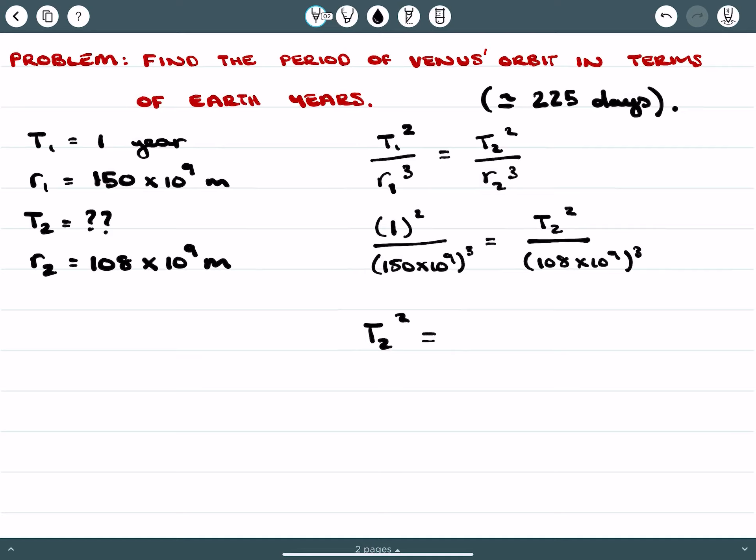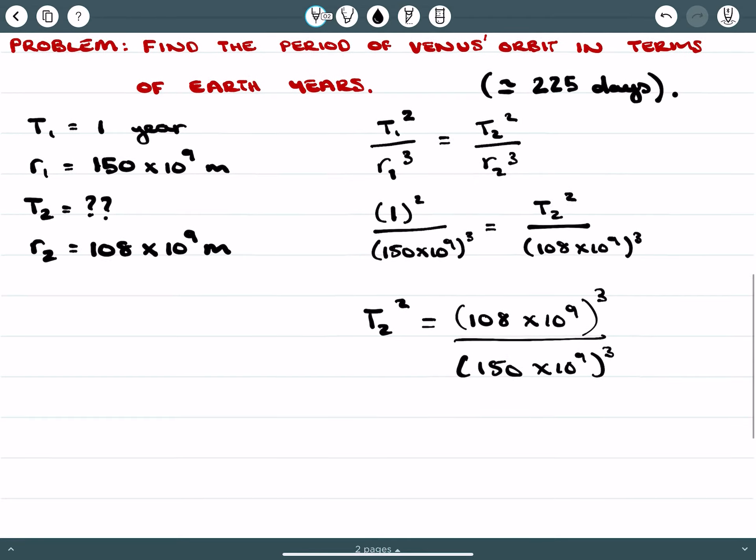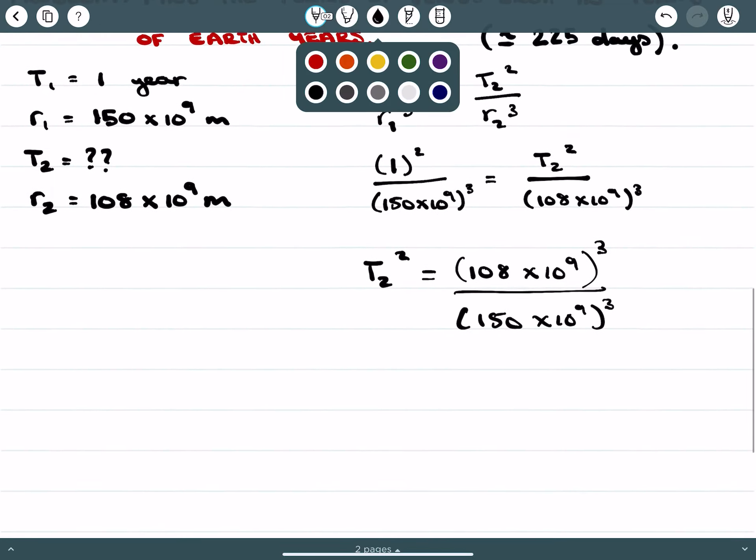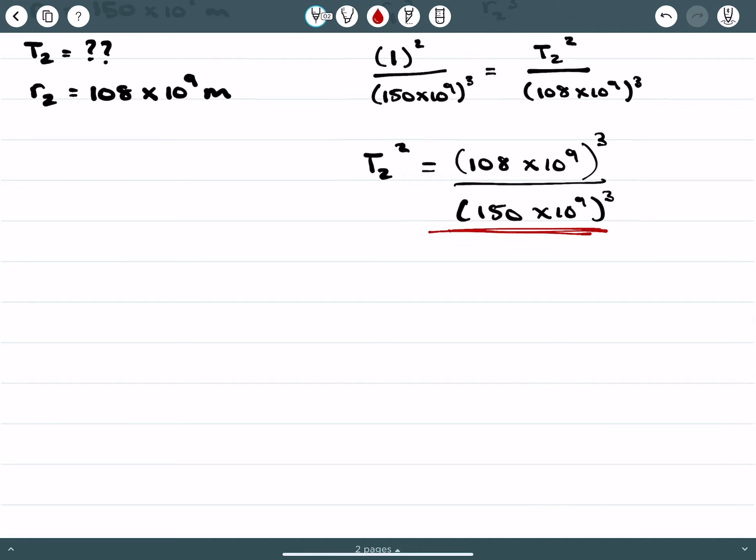I'm going to simplify this expression. What I'm recognizing is that this is 108 times 10⁹ and 150 times 10⁹, all cubed. I can do that because if both values in this fraction are cubed, I can use the law of indices to cube both of them and perform some cancellation.